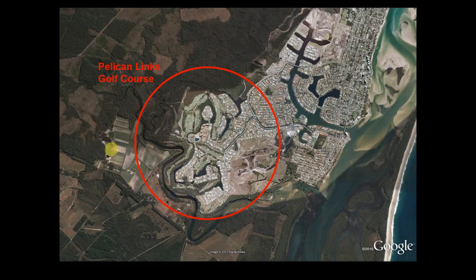Focusing on Pelican Links golf course: a couple of decades ago, a canal estate was approved in the area. The benefits of a canal estate are that you buy low-lying, flood-prone coastal land cheaply, then get approval to dig out big canals. You use the fill from the canals — the mud you dig out — to raise up the land around the canals and build houses on them, taking low-value land and turning it into high-value waterfront property.